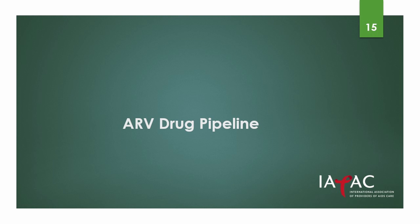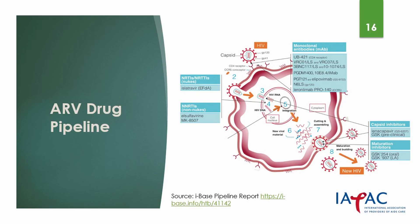Let's turn now to some antiretroviral drugs that are in the pipeline in development. Two new drugs include lenacapavir and islatravir. Lenacapavir is an investigational drug that has been studied to treat and prevent HIV infection. It belongs to a group of HIV drugs called capsid inhibitors, which interfere with HIV capsid — a protein shell that protects HIV genetic material and enzymes needed for replication. Islatravir is a first-in-class nucleoside reverse transcriptase translocation inhibitor.